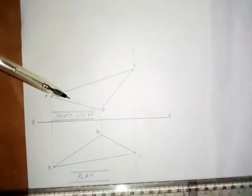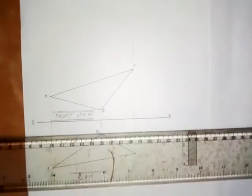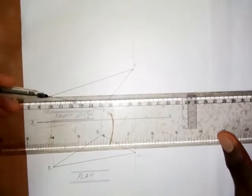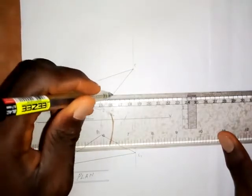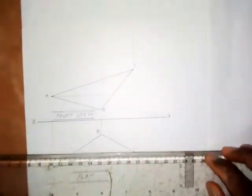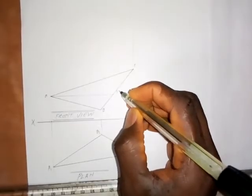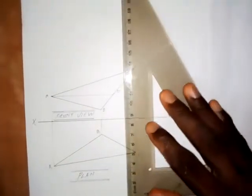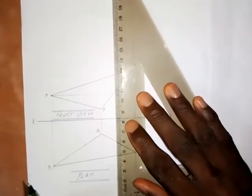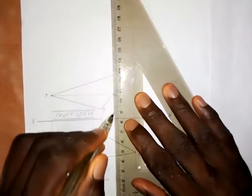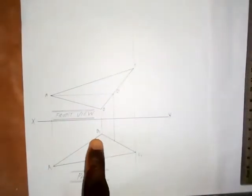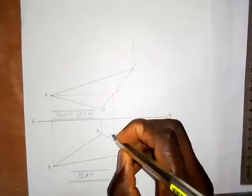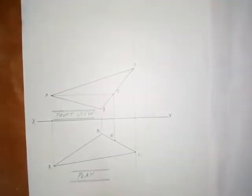From point A on the front view, draw a horizontal line. Wherever it meets line BC, stop it there and call it point D. From this point D on the front view, produce a vertical line down into the plan. Wherever it meets line B1C1 on the plan, call it point D1.